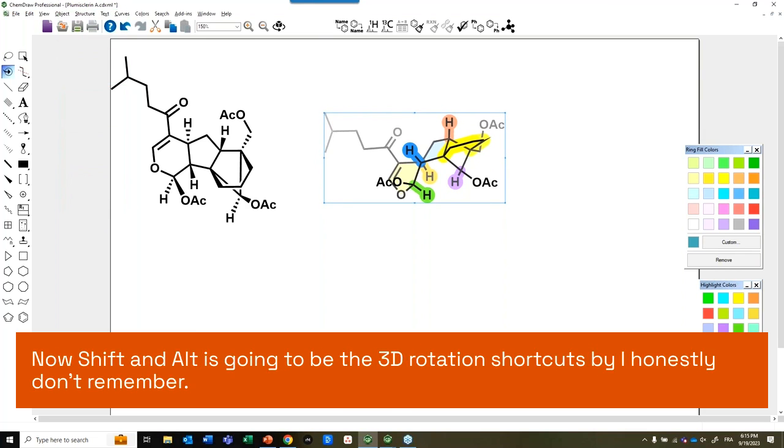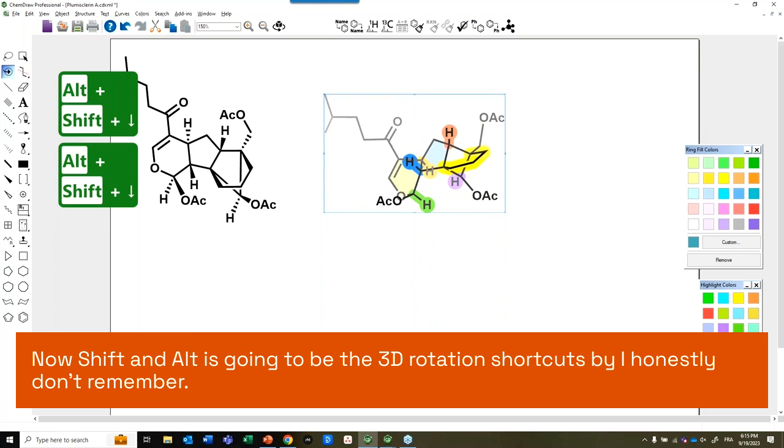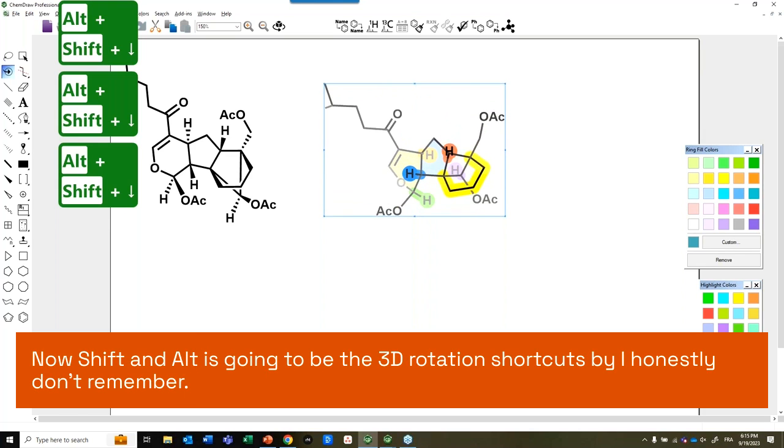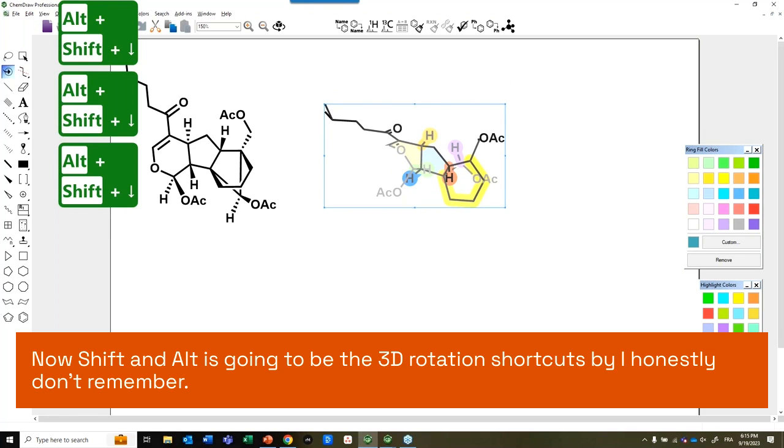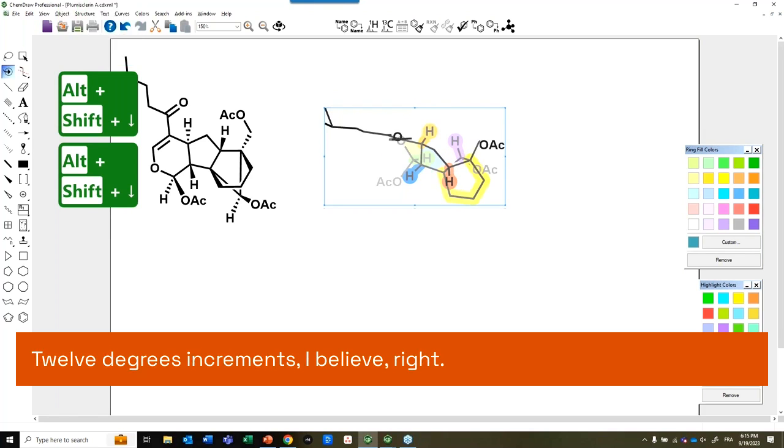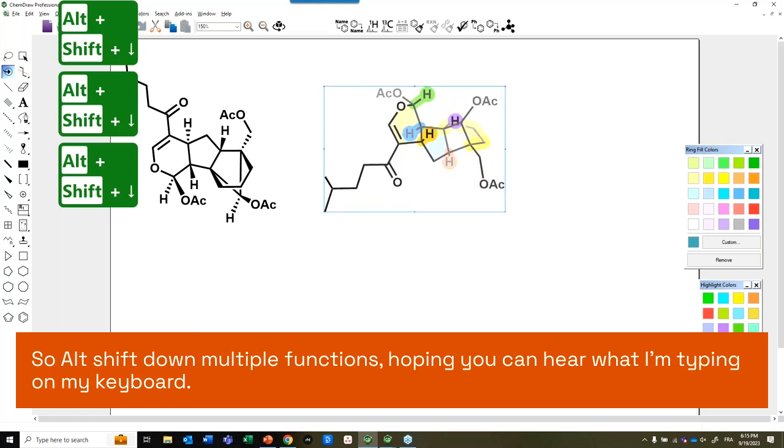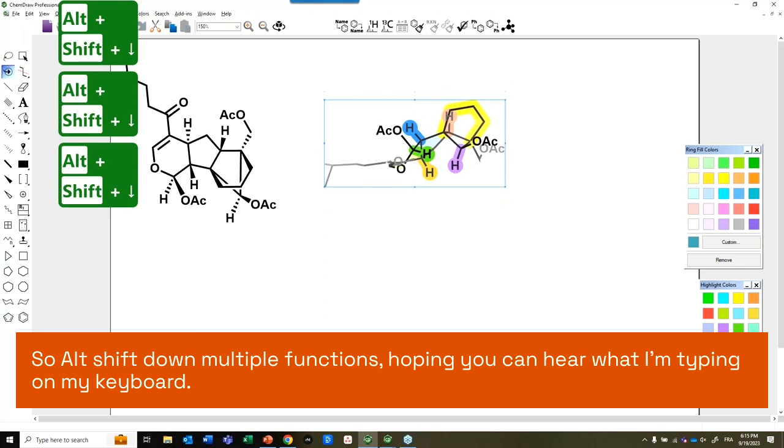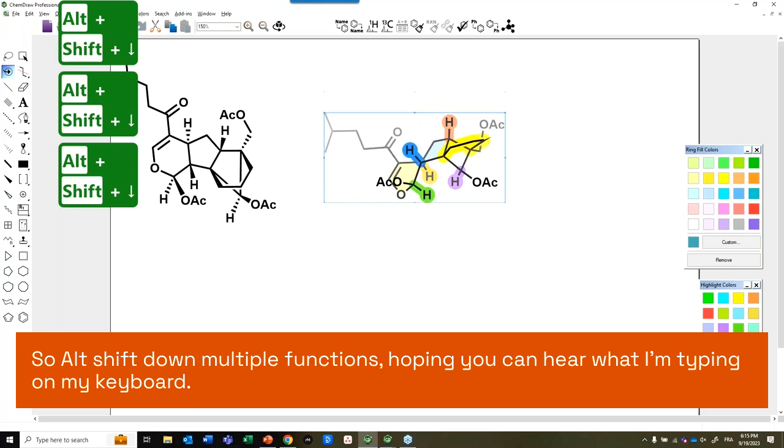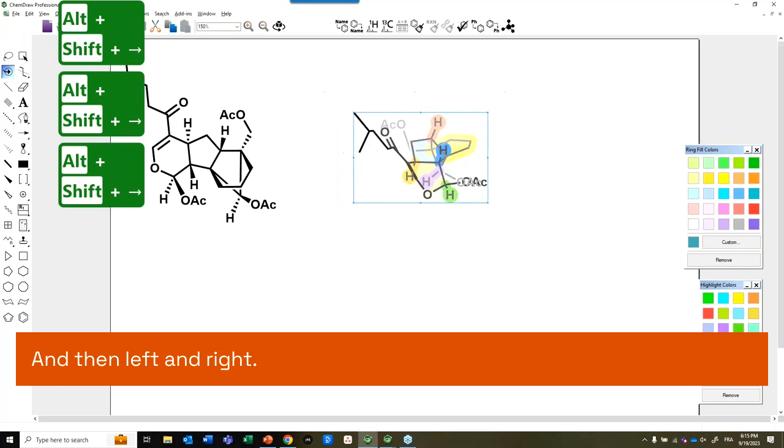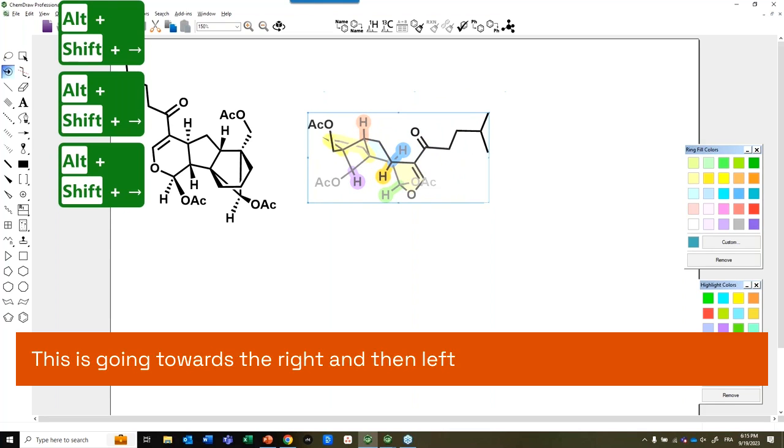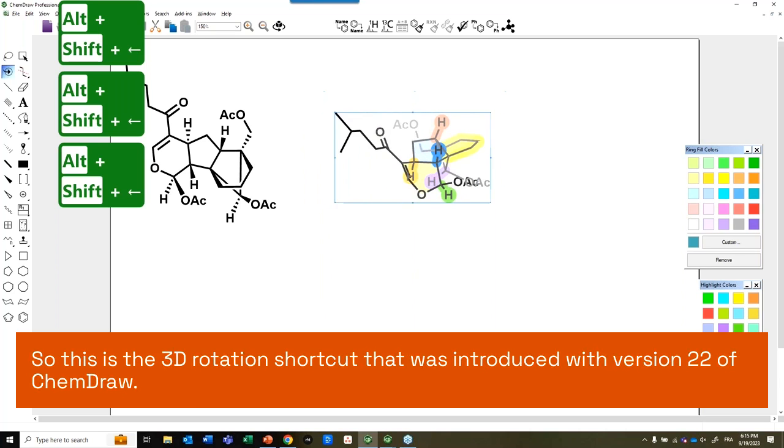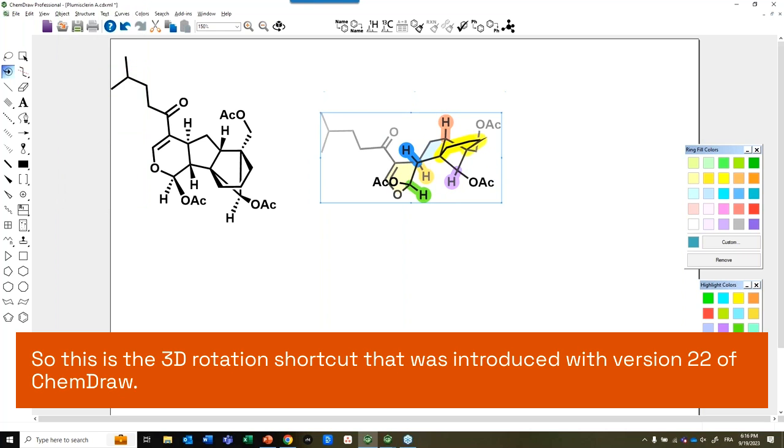Now, Shift and Alt is going to be the 3D rotation shortcuts by, I honestly don't remember, 12 degree increments, I believe. So if I go Alt Shift Down multiple times, I'm hoping you can hear what I'm typing on my keyboard. And then Left and Right, this is going towards the right, and then Left, obviously, we go the other way. So this is the 3D rotation shortcut that was introduced with version 22 of ChemDraw.